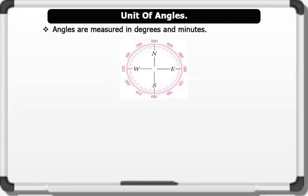Unit of Angles: Angles are measured in degrees and minutes. This can be compared with the movement of the arms of a clock, which measures minutes and seconds.